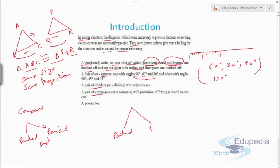So this is the difference between divider and compass. The last is you need a protractor, which is very important. I'm sure you must all know what is a protractor.